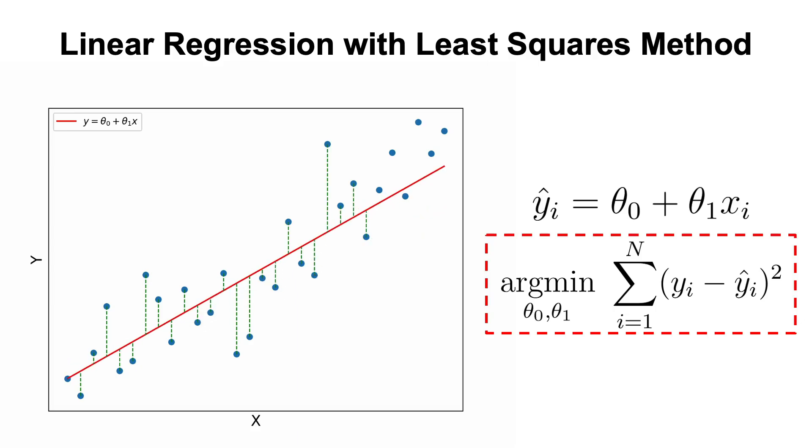So we want to minimize the following: sum from i equals 1 to N of (yi minus y hat i) squared, which is (yi minus theta0 plus theta1 xi) squared. Remember this since we'll need it later.